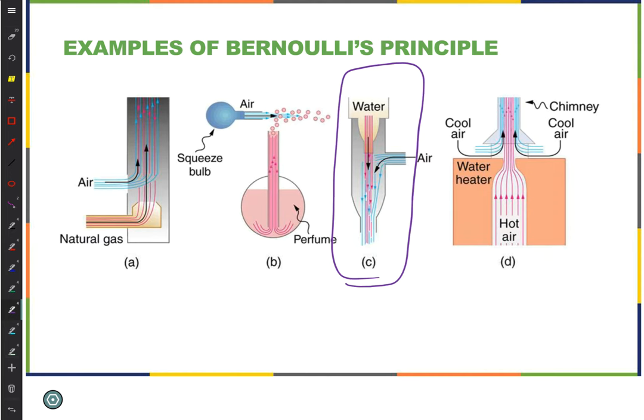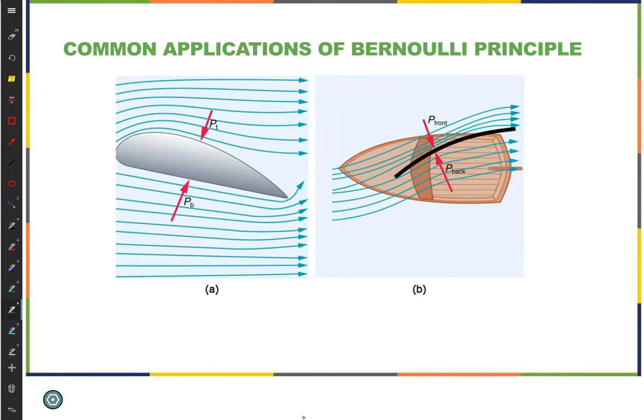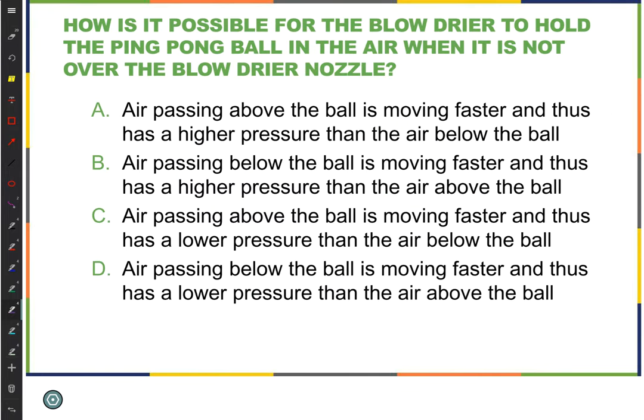Next demonstration here. Back to my blow dryer. And of course, you might have seen this at all times in museums. But if I rotate it, I can get the ping-pong ball, so it's now clearly not over the nozzle. Right, it's quite a ways out from being over the nozzle, and eventually it falls. So how is it possible for the blow dryer to hold that ping-pong ball in the air when it's not over the nozzle?